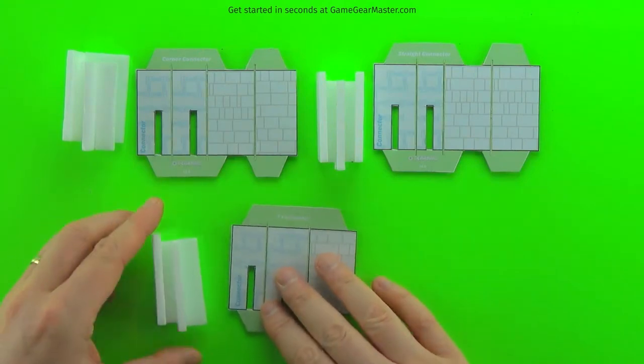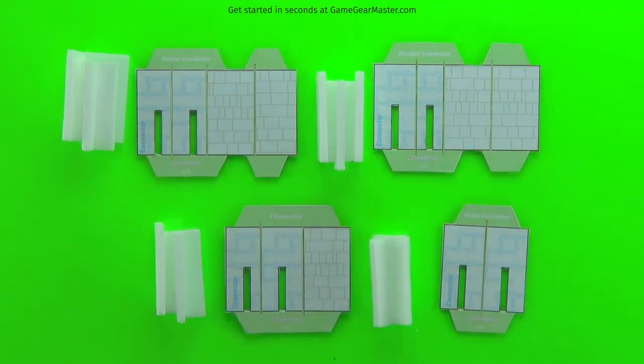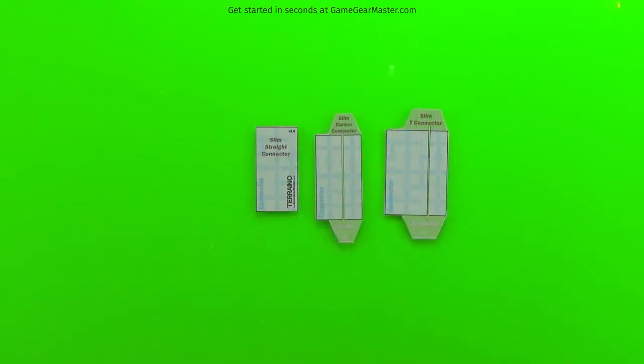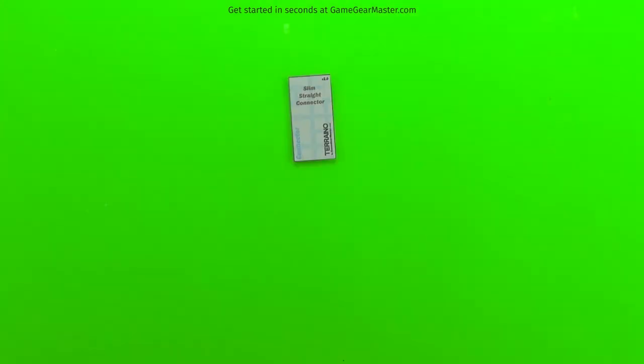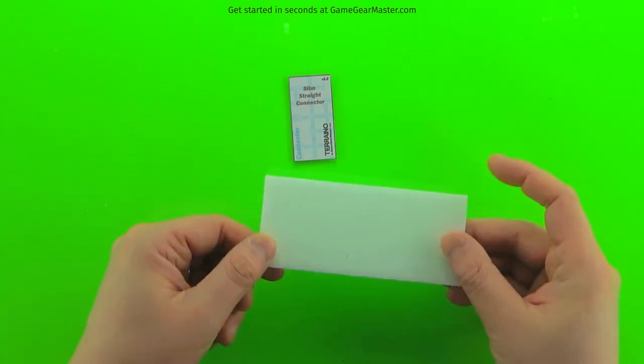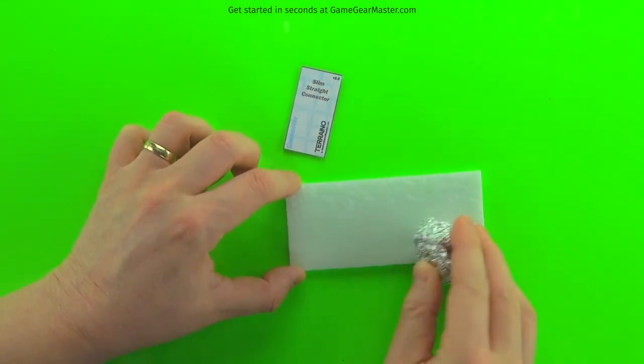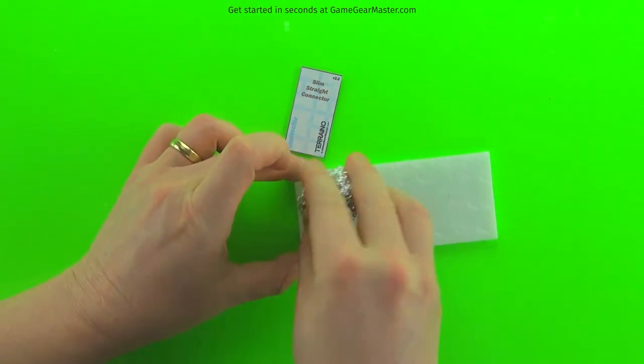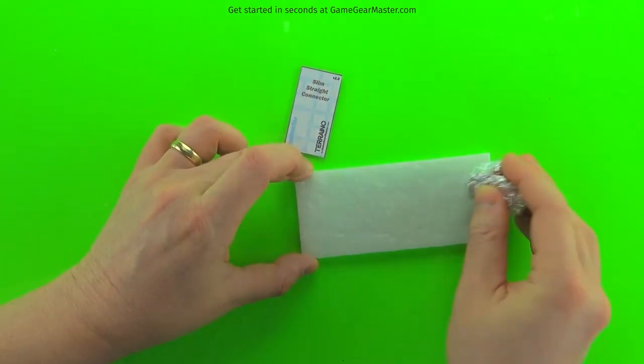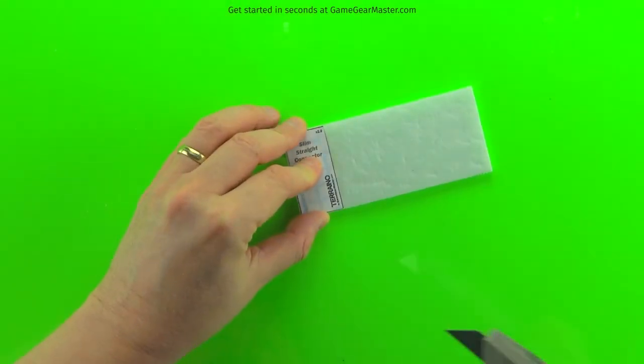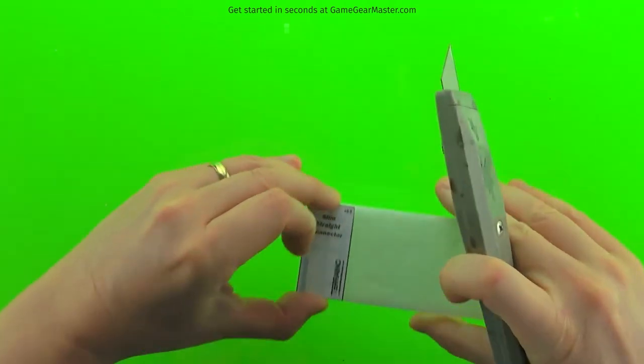Up next, I'll show you how to do slim connectors. There's three types of these. Generally, I don't recommend using these for terrain assemblies that you're going to be moving around because these do not grip as solidly to the walls as regular connectors do. But they are nice in that they are a little bit more minimalistic and they take up a little bit less foam. So for the straight slim connector, we're going to have to texture the backside of the foam as well as the front side since you're going to see both sides. And yes, the slim straight connector is literally just one piece of foam.